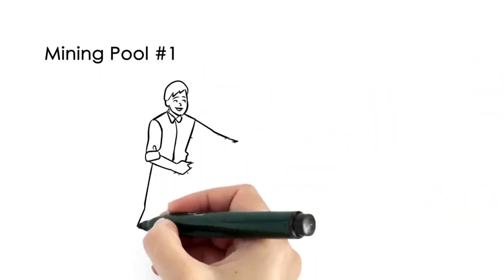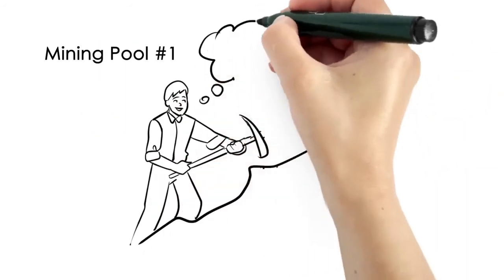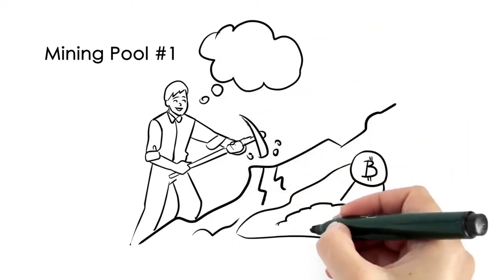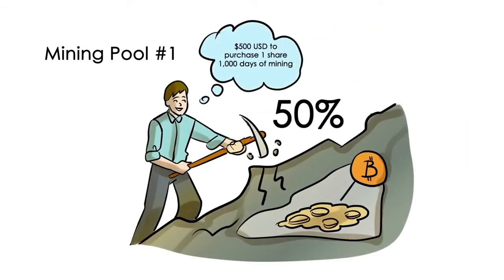Mining pool number one: $500 US dollars to purchase one share that pays you for 1,000 days of mining. 50% of all profits will be paid to you on a daily basis, and another 50% will be used to help you purchase additional shares in this mine.